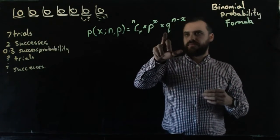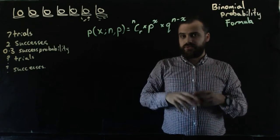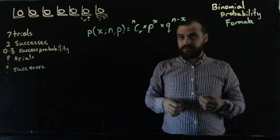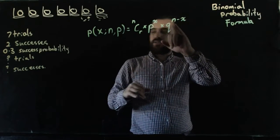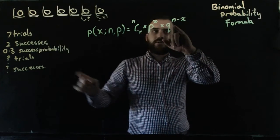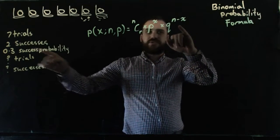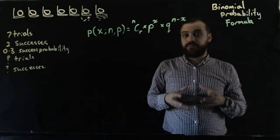Times Q. Q stands for the probability of failure to the power of n minus x. The number of trials minus the number of successes. That's actually the number of failures.